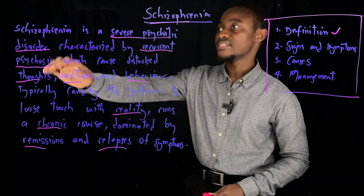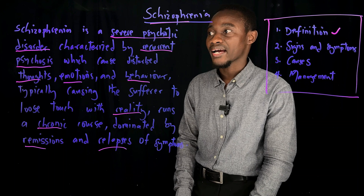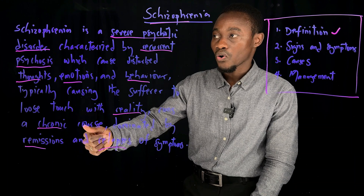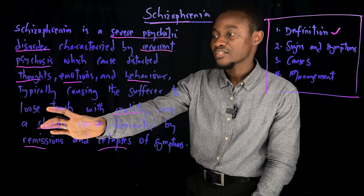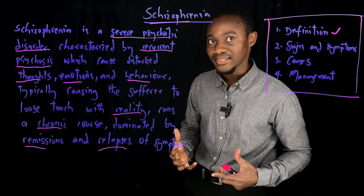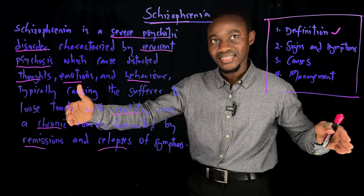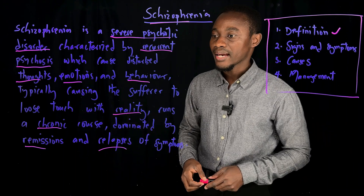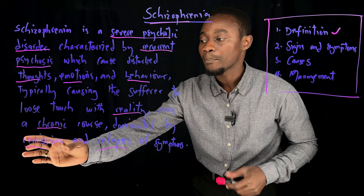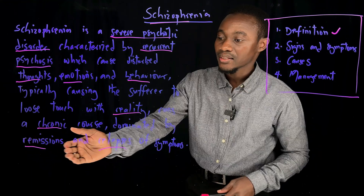The level of psychosis in Schizophrenia typically causes an individual to struggle to differentiate between reality and fantasy because of the kind of perceptions, thoughts and emotions they are having. It also runs a chronic course — meaning this disorder stays with the individual for a very long time. It doesn't get treated easily like a urinary tract infection or common cold. The chronic course is dominated by remissions, which are periods where the individual appears symptom-free or symptoms are lessened, and relapses, where symptoms worsen.